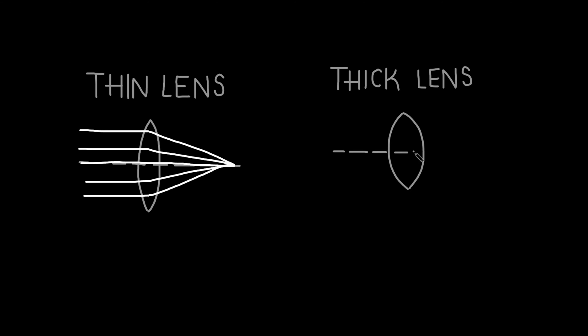What is a thin lens? The thickness of a lens determines how much light entering the lens will be refracted. The thicker the lens, the more the light will be refracted. A thin lens is a lens with negligible thickness.